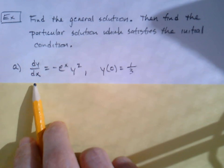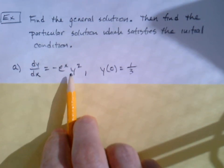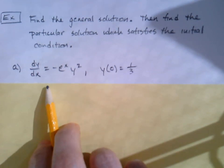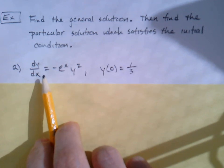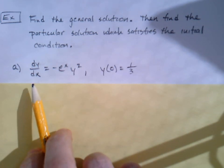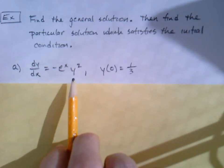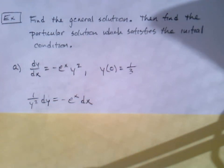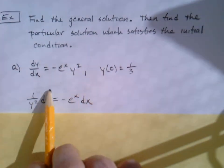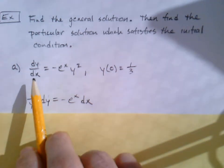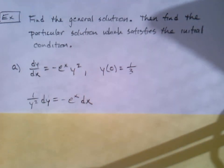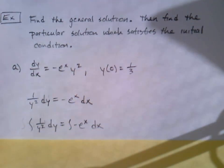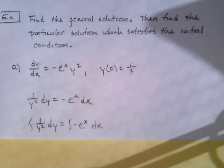In part A, we're going to start off with that example from before: dy over dx equals negative e to the x y squared. We've got our separable differential equation, so we're going to put the y's on the left, the x's on the right. We're going to divide our y squared over and multiply our dx over.